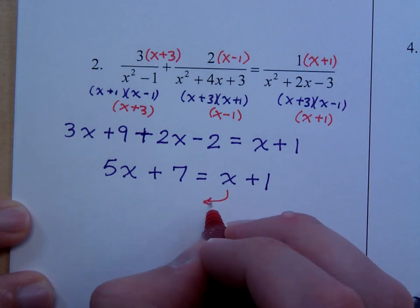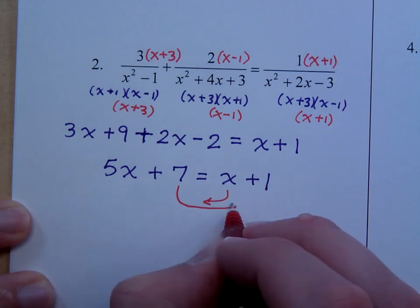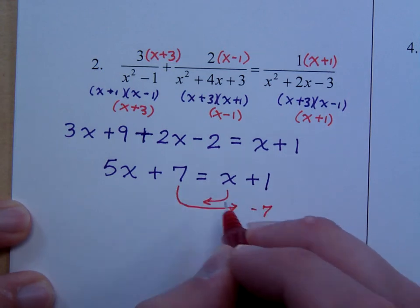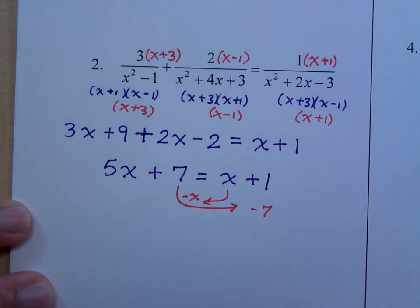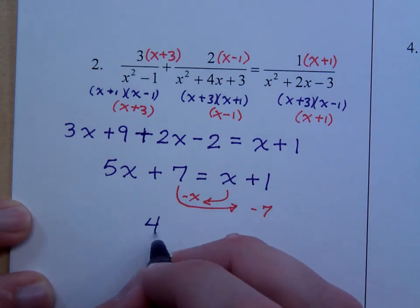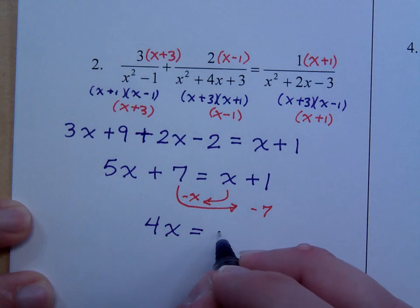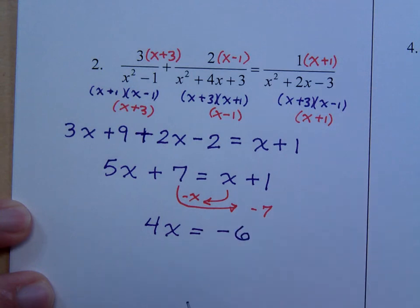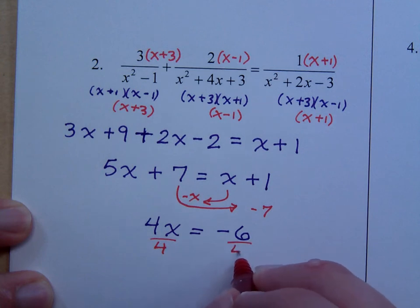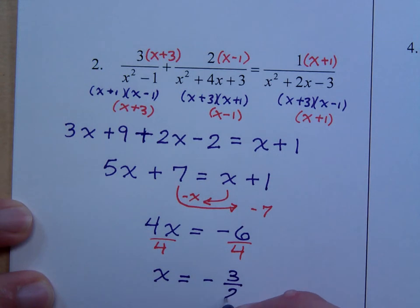If I move the x to the left and 7 to the right, that's a negative 7, this is a negative x. We end up with 4x is equal to negative 6. Divide both sides by 4 and simplify. x equals negative 3 halves.